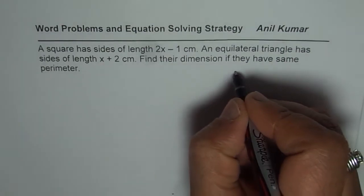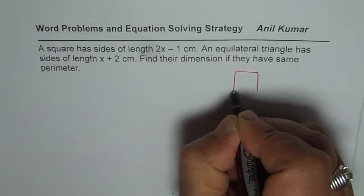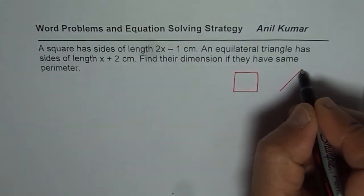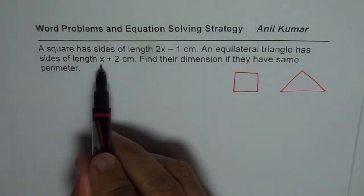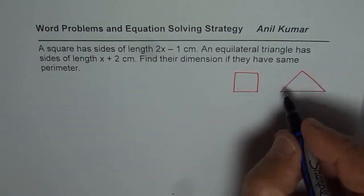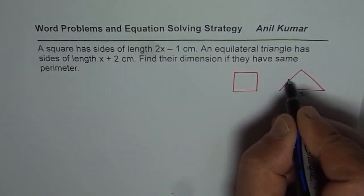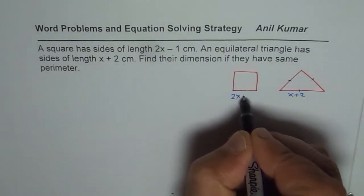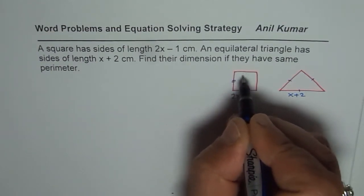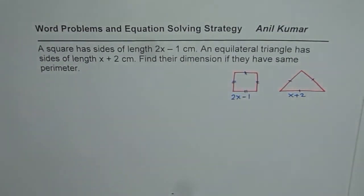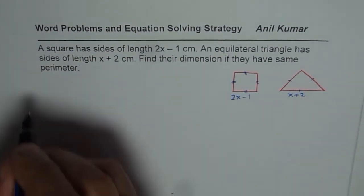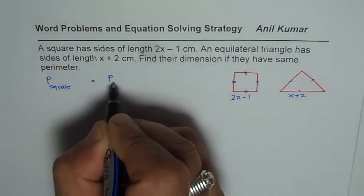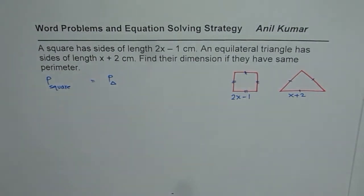So what we are given here is that we have a square whose side is 2x-1 each side, and we have an equilateral triangle whose side lengths are x+2 each. Equilateral triangle means all equal sides. Similarly, for square we are given lengths of 2x-1 for each side, so in a square all sides are equal. And we are also given that the perimeter of square is equal to perimeter of triangle.